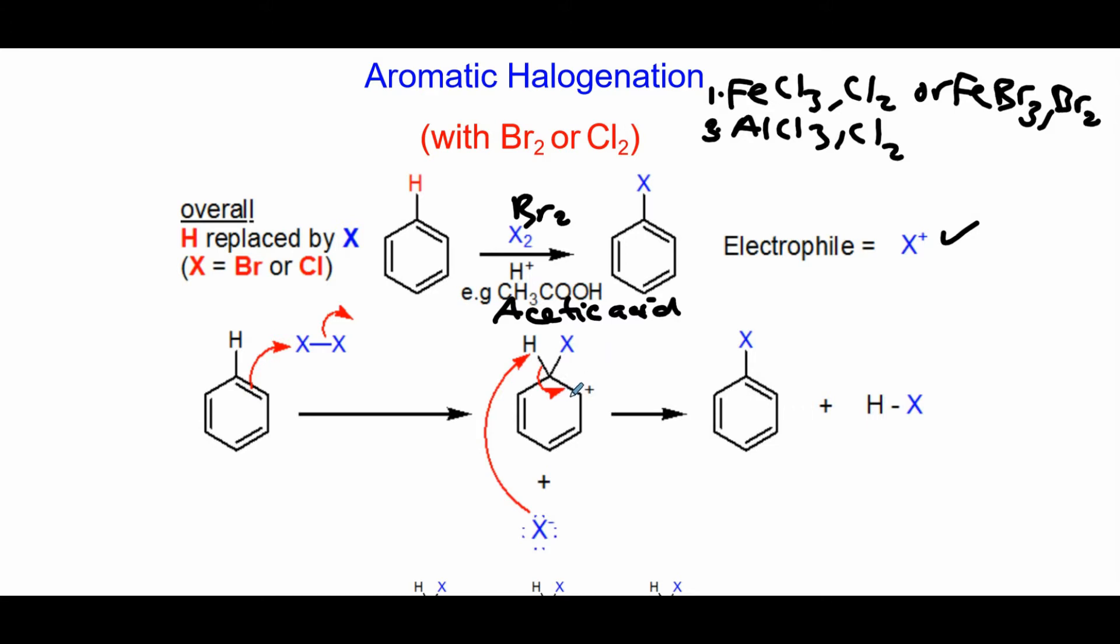So the first step: the ring uses a pi bond to attack one of the halogens on the diatomic molecule like Br2. The other halogen leaves. Then this carbon here will have to have a plus charge because the pi bond has been used by this carbon to bond to a halogen.